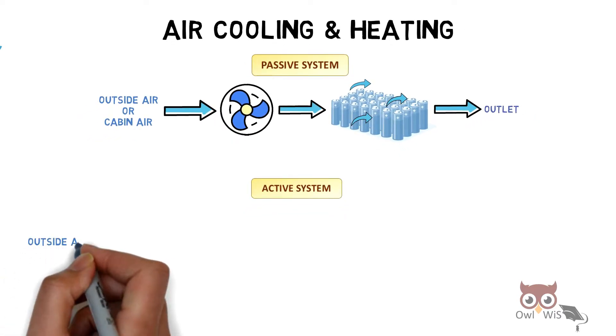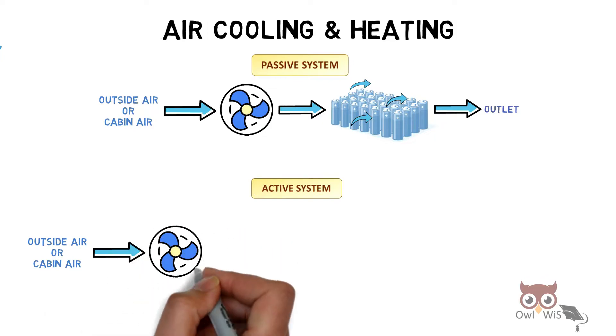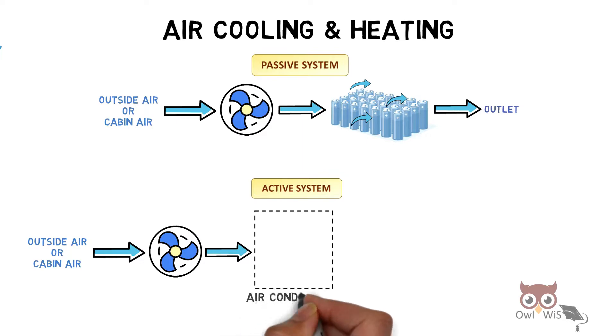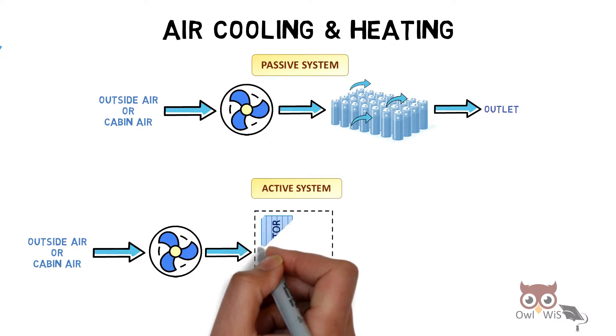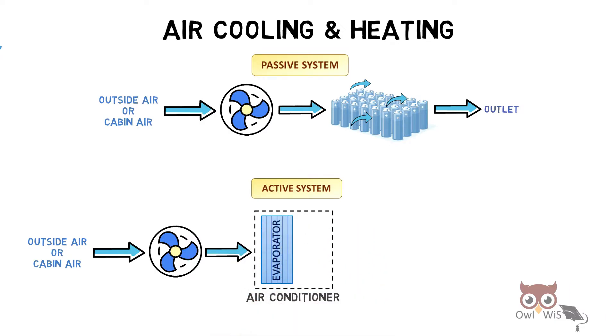Another type of system is active system. Here also the outside air or cabin air is taken in through the blower, which is then passed through an air conditioner, which enhances the cooling or heating power, which consists of an evaporator and a heater.